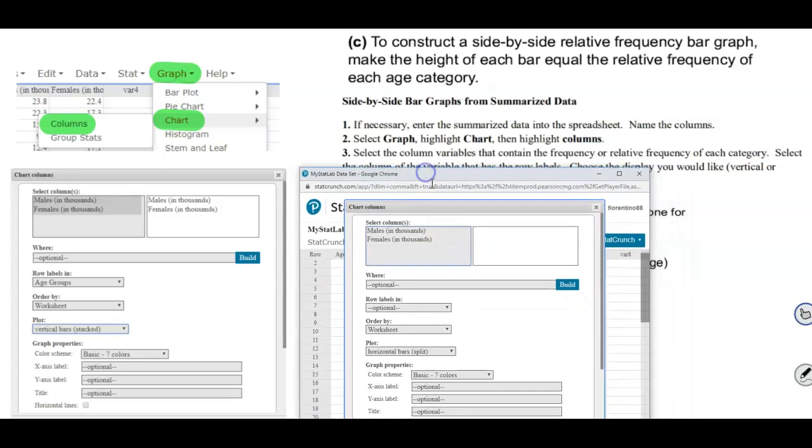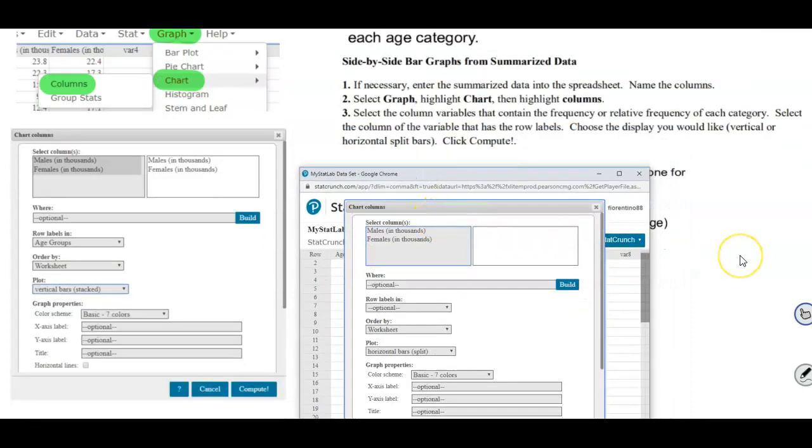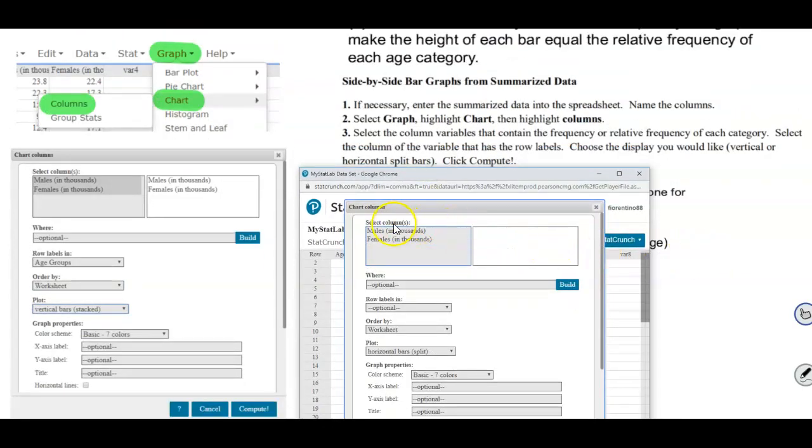And now once we've gotten to this part, we want to select the columns. So if we select the first one it's going to go into that box, then we have to hold down the control button and select the female so they're both in there. And then for row labels we can use age groups.